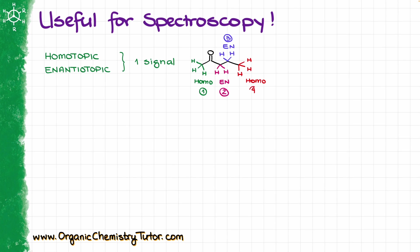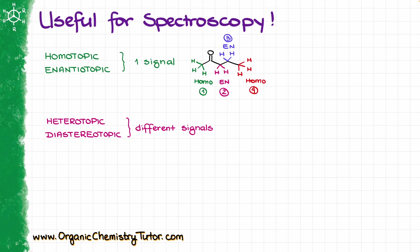HNMR will not be able to distinguish between the hydrogens within each group — for NMR purposes, hydrogens within each group are going to be identical. However, if we have heterotopic groups or diastereotopic groups, they are going to be different in NMR and give you different signals. For instance, if I look at this vinyl chloride, these two hydrogens are heterotopic, these two are also heterotopic, and my blue and green hydrogens are diastereotopic, which means this molecule is going to give you three unique signals.